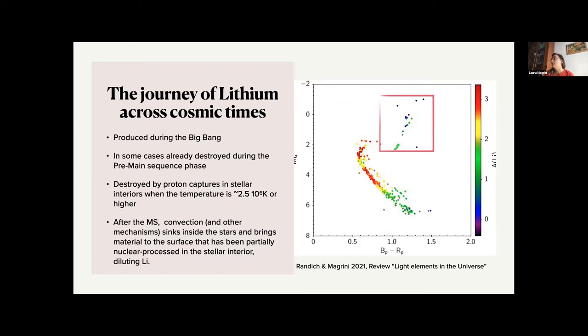In this plot, I'm showing the lithium evolution in one of the Gaia-ESO clusters, open clusters, and it's nice to see color-coded by lithium abundances, the evolution along the main sequence, and then in the post-main sequence, where the stars are color-coded in blue, or in green, meaning a strong depletion of lithium during this phase.